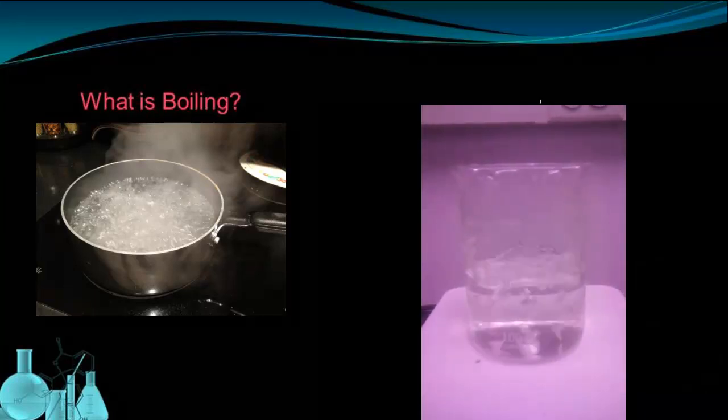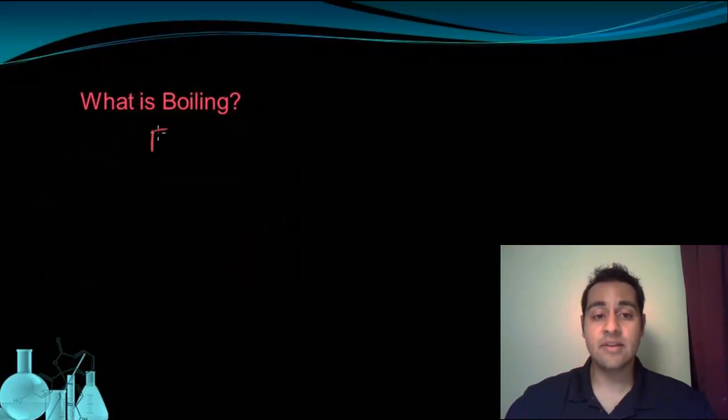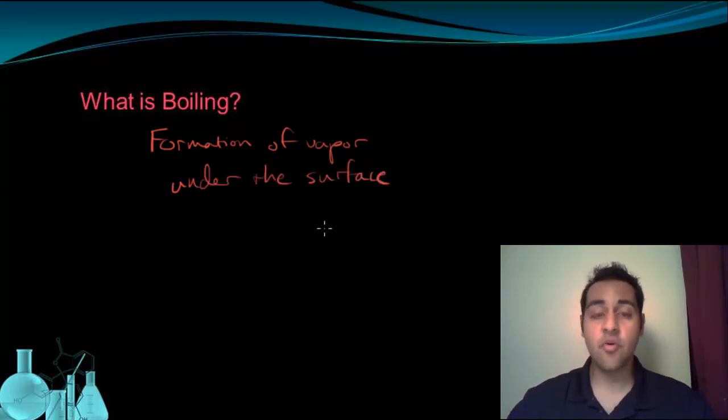The bubbles coming up through this water tell you that the water is boiling, and these bubbles are being formed below the surface of the water. So boiling is actually the formation of vapor under the surface of the liquid. And when that vapor is formed under the surface, it creates those bubbles that then travel upward and break through the surface to release that vapor into the air. And that's why you get this bubbling motion in a boiling liquid.